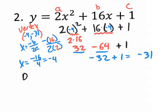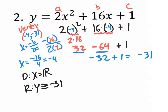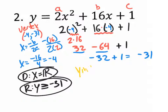We found the vertex. How about the domain? X equals all real numbers. How about the range? Is y going to be above or below a certain value? Above — because the a value is positive. So y is greater than or equal to the y value of the vertex, which is negative 31. So the range is y is greater than or equal to negative 31. And the y-intercept — if you set x equal to zero, both the x terms turn to zero, and your answer will be 1.